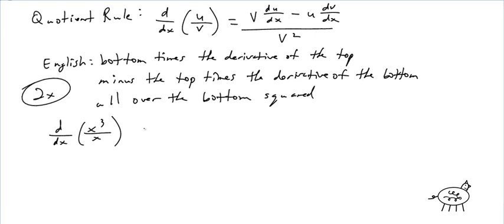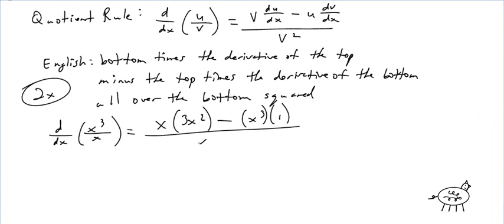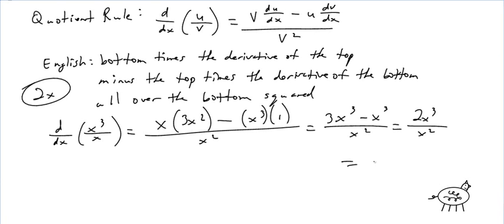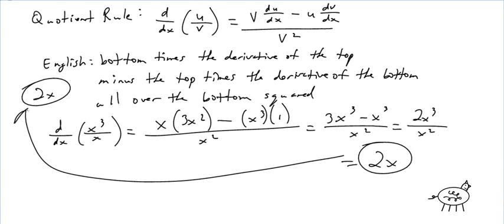Bottom times the derivative of the top, which is 3x², minus the top times the derivative of the bottom, all over the bottom squared. I simplify and get 3x³ − x³ over x², which is 2x³ over x² — and that gives us 2x!